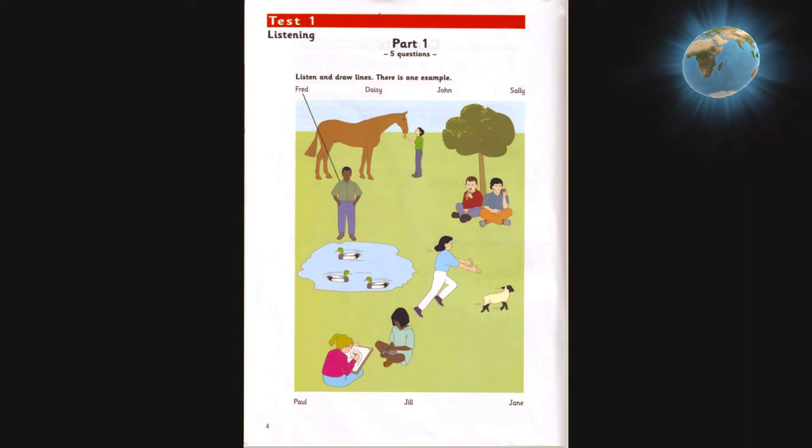Where's Paul? He's sitting under the tree with his friend. There are two boys under the tree. Which one is Paul? He's eating a banana. Oh, yes. I can see him now.